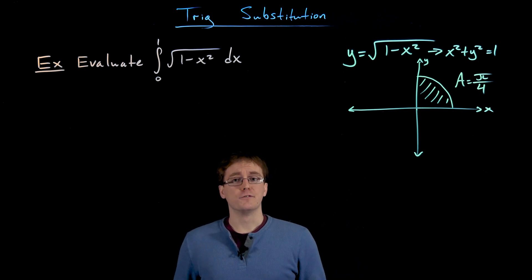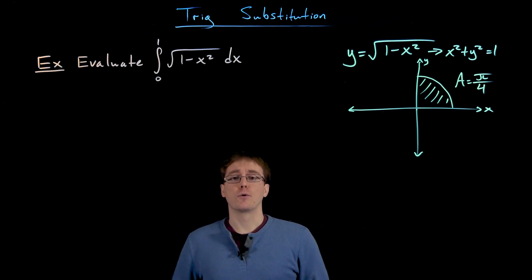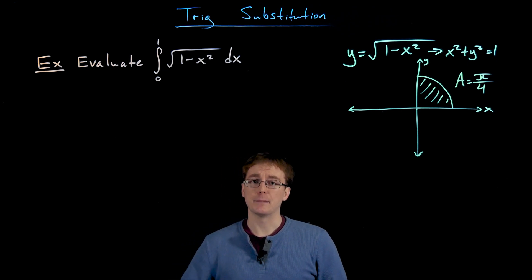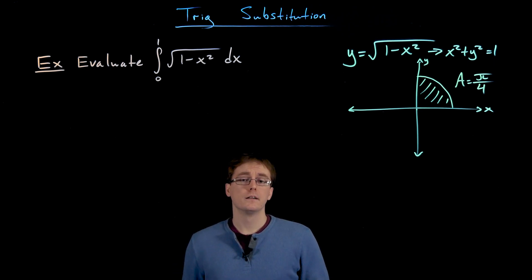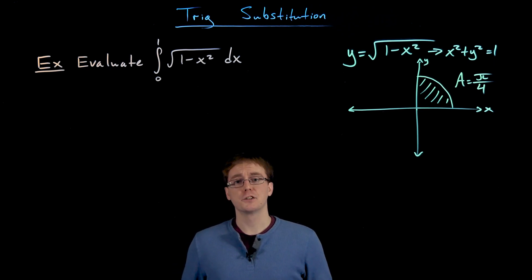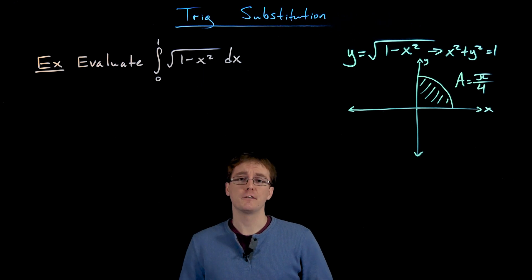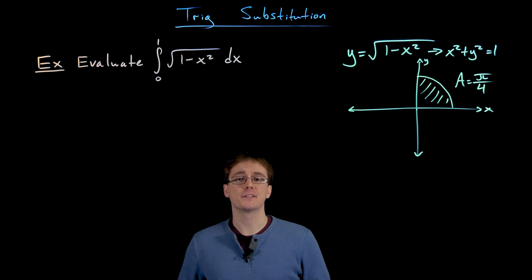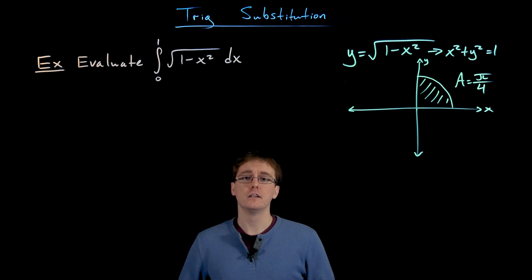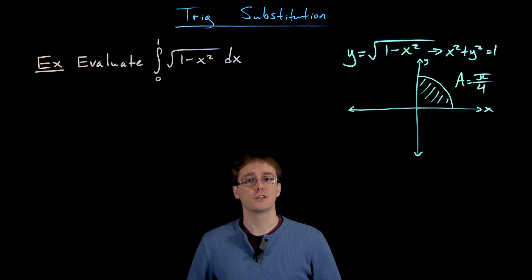Now I would like us to verify this result. We should get pi over 4 out of this integral when we do it algebraically using trigonometric substitution. There are lots of connections between our trig functions, our circle, and its equation, and those connections are going to help us develop this technique of trigonometric substitution.